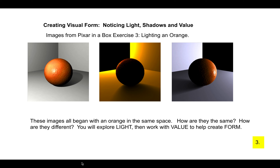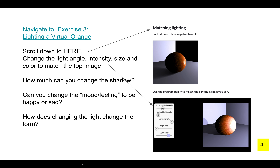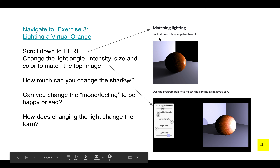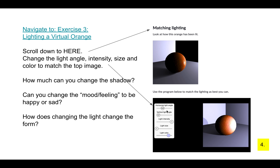You will explore light, then work with value to help create form. In a moment, when I say pause, you're going to navigate to Exercise Three online of Pixar in a Box — Lighting a Virtual Orange. Scroll down and you'll get to toggle and slide controls back and forth to change the light.